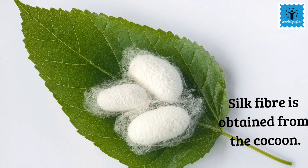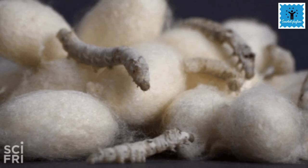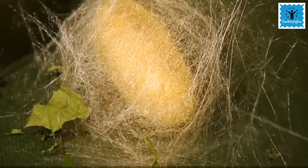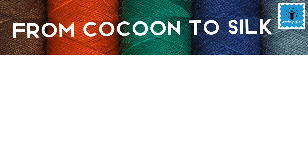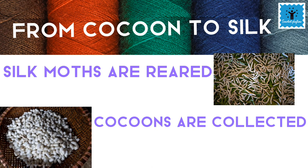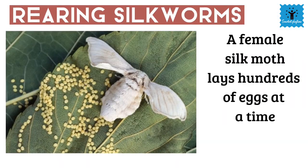Silk fiber is obtained from the cocoon. In order to produce silk, the silkworm developing inside the cocoon is not allowed to mature into an adult silk moth, so as soon as the cocoon is formed it is used to obtain silk fiber. In the processing of silk, silk moths are first reared and their cocoons are collected to get the silk thread. A female silk moth lays hundreds of eggs at a time.